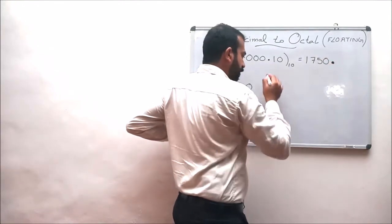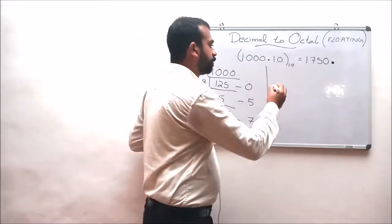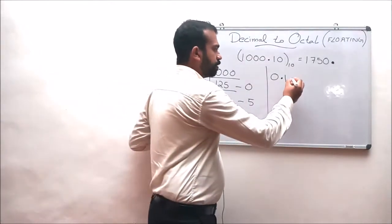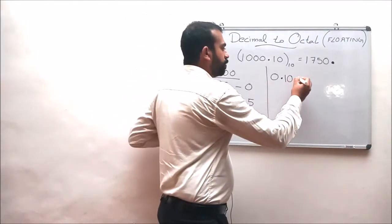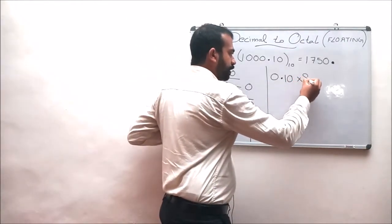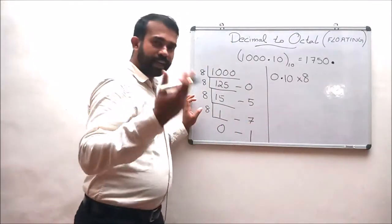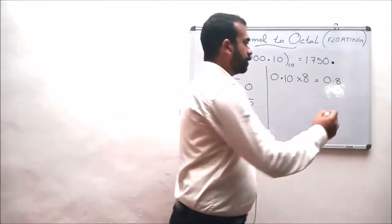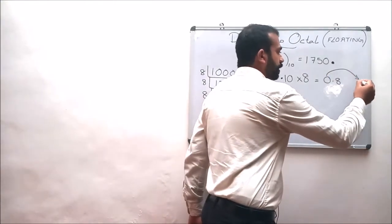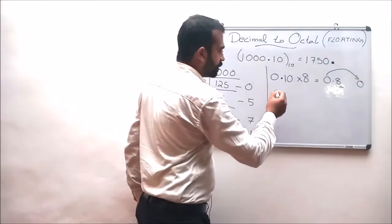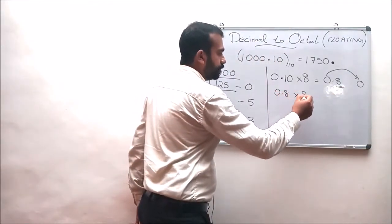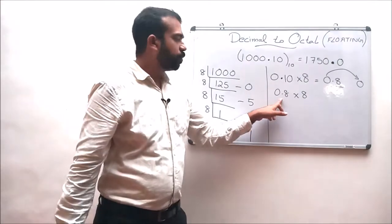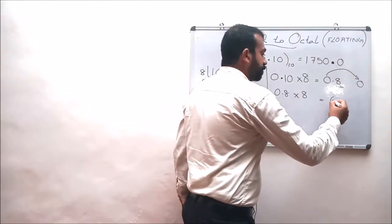In the second step we consider the fractional portion. The fraction is 0.10, which can be taken as 0.1. So 0.1 multiplied by the radix value 8 equals 0.8. The whole number portion is 0, which is taken to the result portion, and the remaining 0.8 is multiplied again with 8, giving 6.4. The 6 is taken to the result portion.